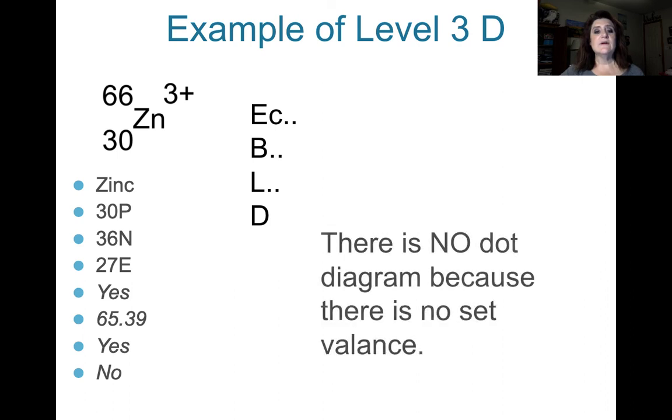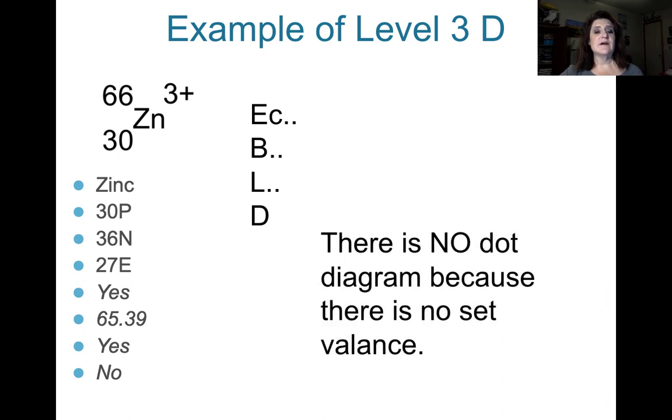Finally, we have the dot diagram, and there is no dot diagram, because zinc is in that little valley box that has no set valence. You're going to be doing these in class. Thanks for watching.